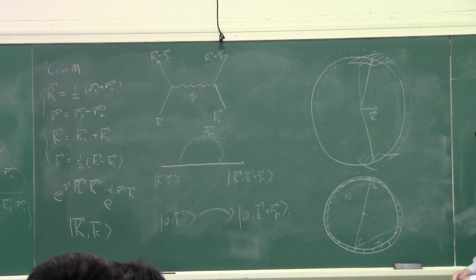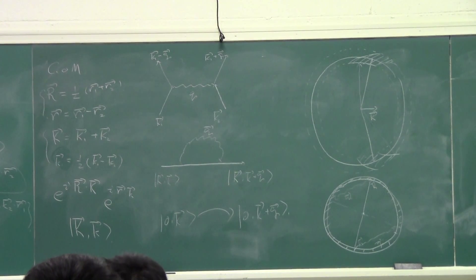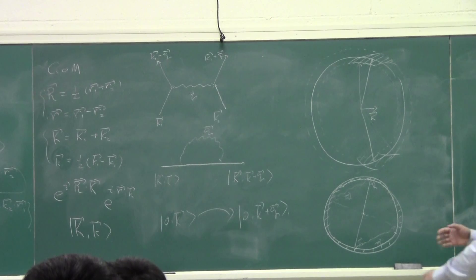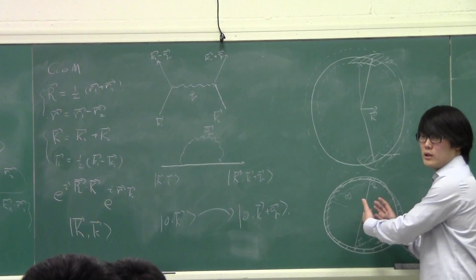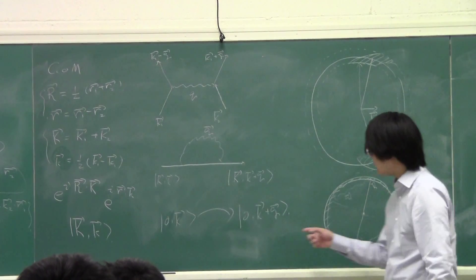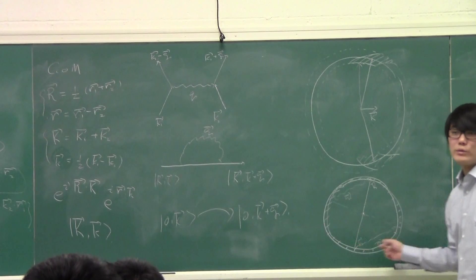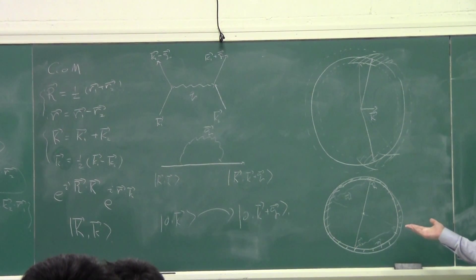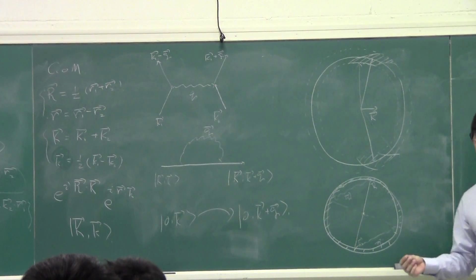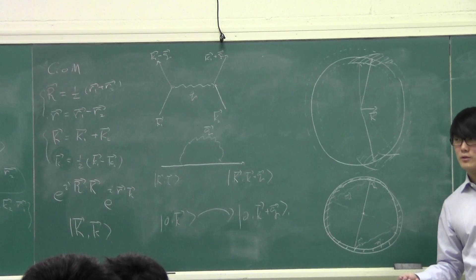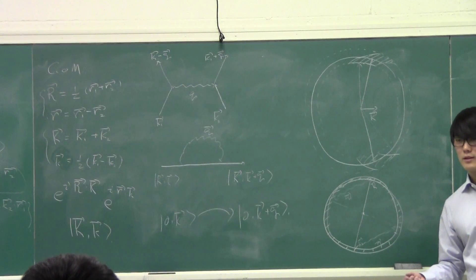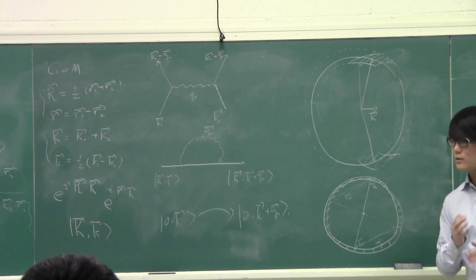We're going to be considering states with zero total K and some small k. After the scattering, it goes to |0, k + Q⟩. That's the idea. Now, if superconductivity is caused by these kinds of electron pairs whose total momentum is zero, how can there be any conductivity? On average, these two electrons are not going anywhere — how does the charge carry?